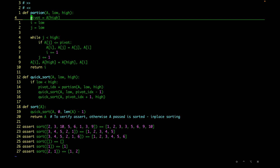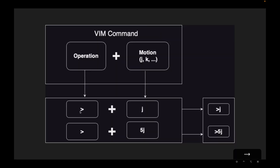To shift multiple lines we can combine the shift operation with motion. So right angle bracket and j — that is `>j` — will shift the current line and the line below it, because j moves one line down. Similarly, `>5j` will shift the current line and the next five lines to the right.